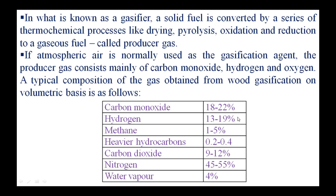Among these, carbon monoxide, hydrogen, and methane are the combustible components. These can be burnt further to get heat from them, and that is why producer gas is a potential fuel for further combustion.